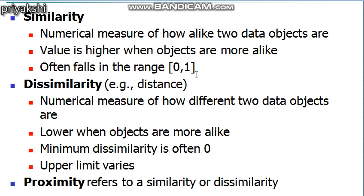For example, if I compare two students — student one and student two — and they are similar in terms of height, weight, and percentage obtained in a particular semester, the similarity value is one. But if their weight, height, and academic performances are not the same, the similarity value is zero, meaning there is no similarity between the students. A similarity value of one means they are completely similar.